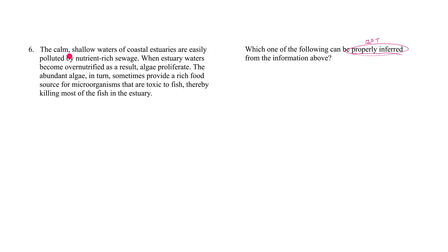Let's take a look at the stimulus. The calm, shallow waters of coastal estuaries are easily polluted by nutrient-rich sewage. When estuary waters become over-neutrified as a result of pollution by nutrient-rich sewage, algae proliferate. The abundant algae, in turn, sometimes provide a rich food source for microorganisms that are toxic to fish, thereby killing most of the fish in the estuary.